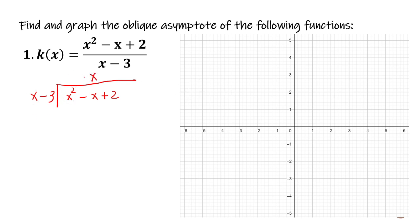The next step is to multiply this to the divisor. So x times x is x squared, x times negative 3 is negative 3x. And what do we do in division? We are going to subtract. So x squared minus x squared is zero.